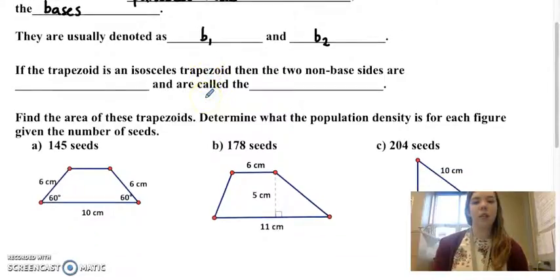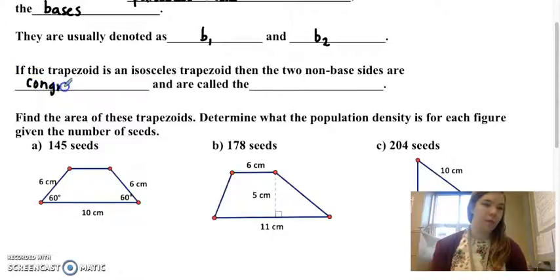If the trapezoid is an isosceles trapezoid, then the two non-base sides are congruent and are called the legs. They're always called the legs of your trapezoid, but if it's an isosceles trapezoid, that means these are congruent.